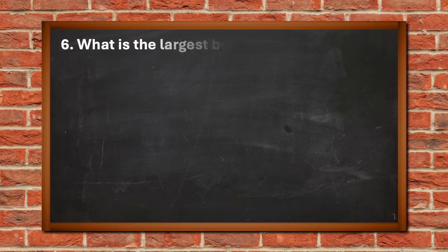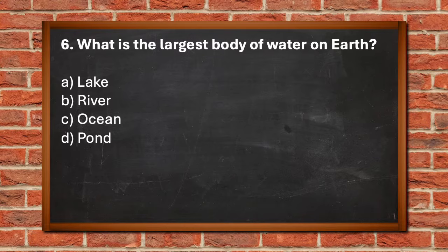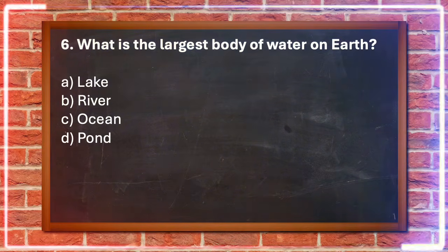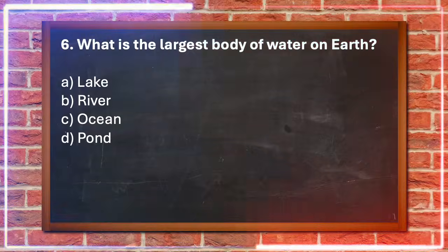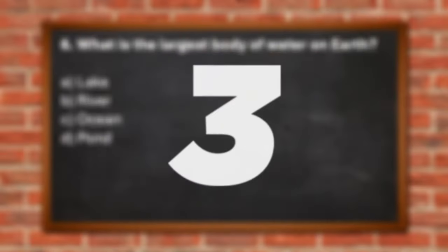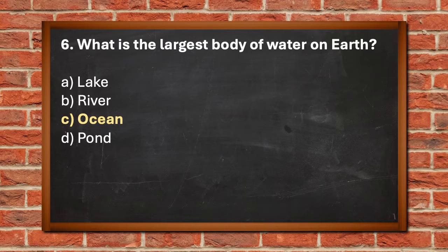Number 6. What is the largest body of water on earth? A. Lake, B. River, C. Ocean, D. Pond. The answer is C. Ocean.